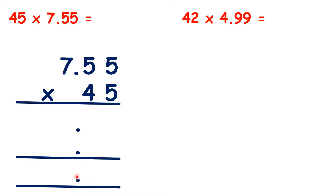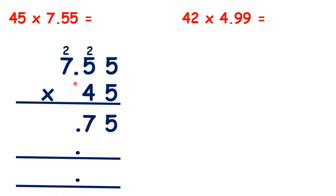Then we can just multiply as we normally would if we were doing 755 times 45. To start with, although what we're really doing is five hundredths times 5, because we've put our decimal points in, we can just start with 5 times 5, so that's 25. 5 times 5 is 25 plus 2 is 27. And 7 times 5 is 35 plus 2 is 37.